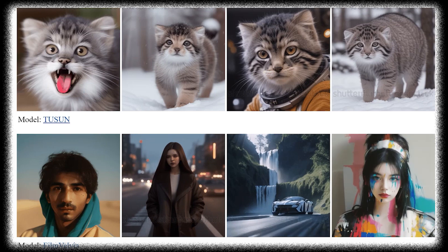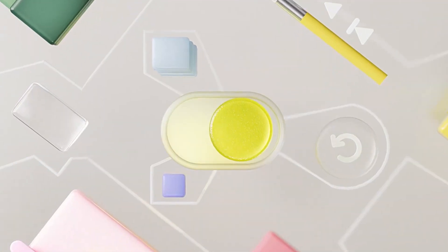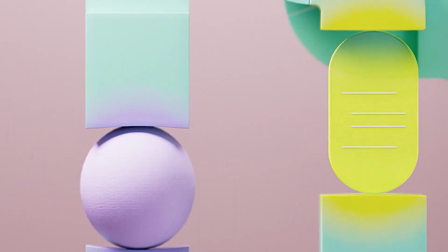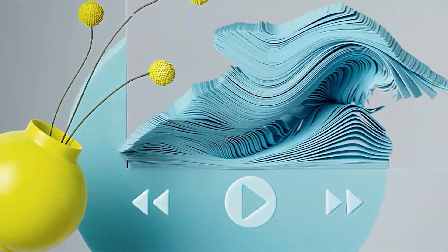The last step is to evaluate the animations generated by the model and adjust its parameters as needed to improve performance. This might involve comparing the model's animations to human-created animations or using other methods to assess the quality of the animations.